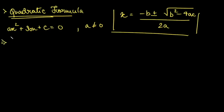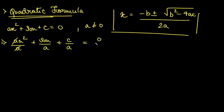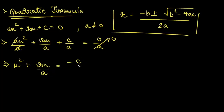We will divide both sides by a. ax squared divided by a — we cancel both the a's out — plus bx divided by a plus c divided by a is equal to 0 divided by a. Now 0 divided by something is 0, so we get x squared plus bx divided by a, and we move c by a to the RHS, giving us x squared plus bx/a is equal to minus c by a.